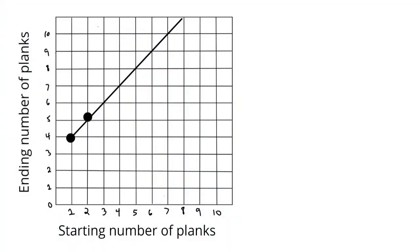Here is my line graph that goes with that situation. You can see my x-axis is the starting number of planks and my y-axis is the ending number of planks. So first can you find the ordered pairs that go with this? Okay great, so if you start at the origin and go over one up four, there's the ordered pair (1,4). Then if you go over two up five there's a point, so (2,5) is the other ordered pair.